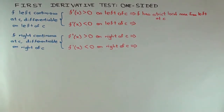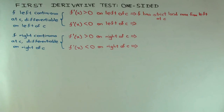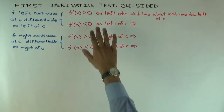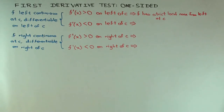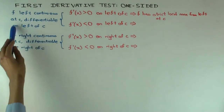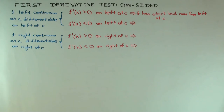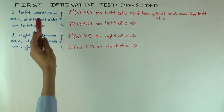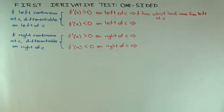The function is increasing on the immediate left of c. But what do you need in order to say it's increasing up to and including c? We don't know anything about f prime at c itself. What you use is left continuity at c — that tells you the increasing behavior extends up to and including the point c. Therefore it has a strict local maximum from the left at c.